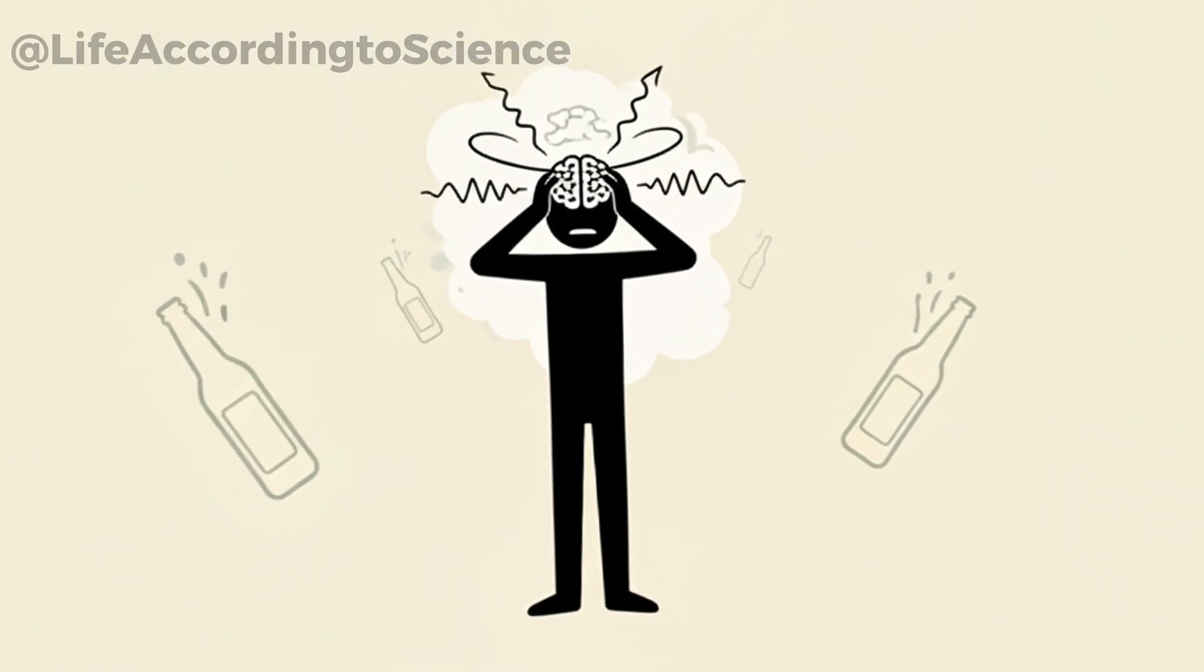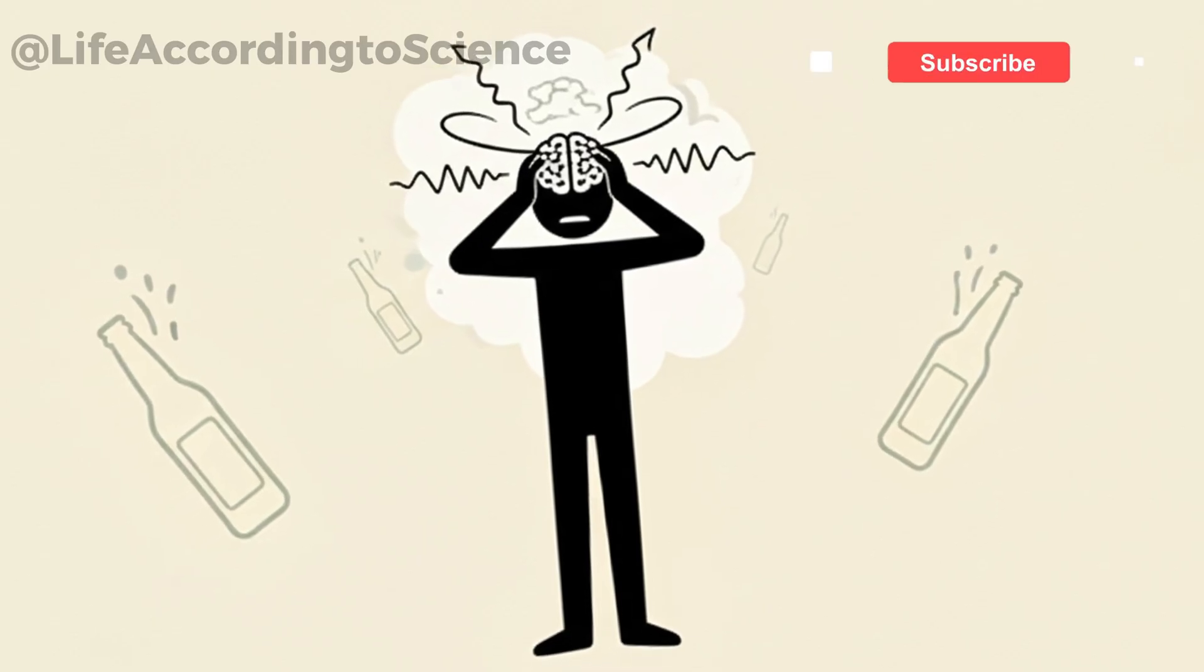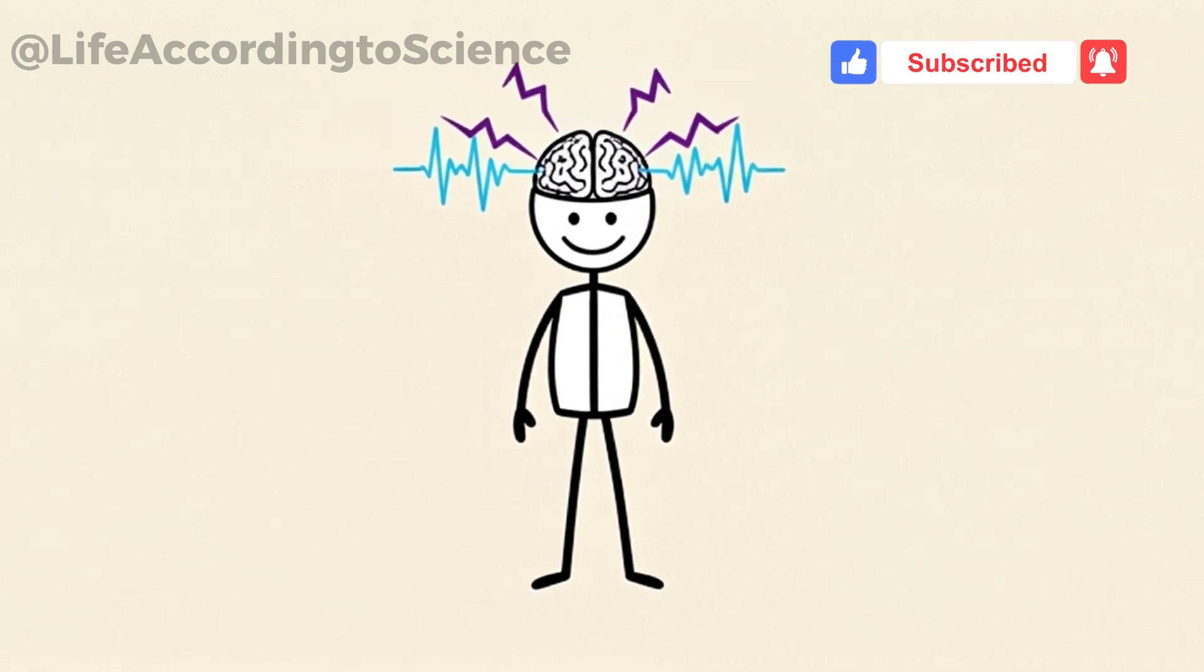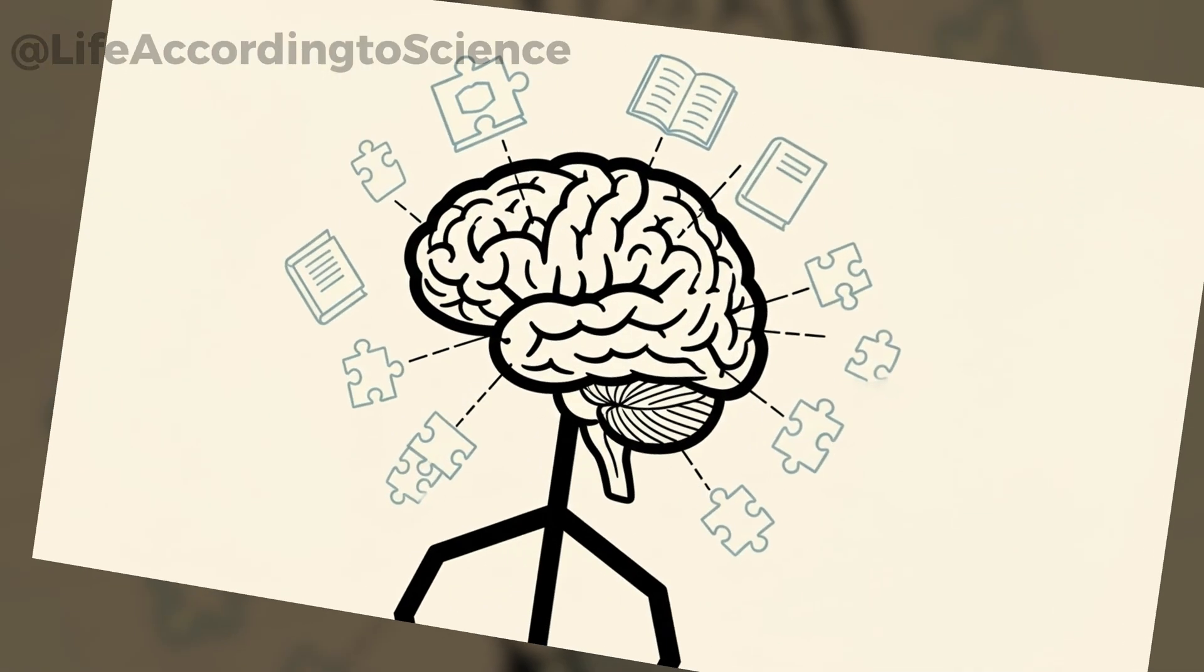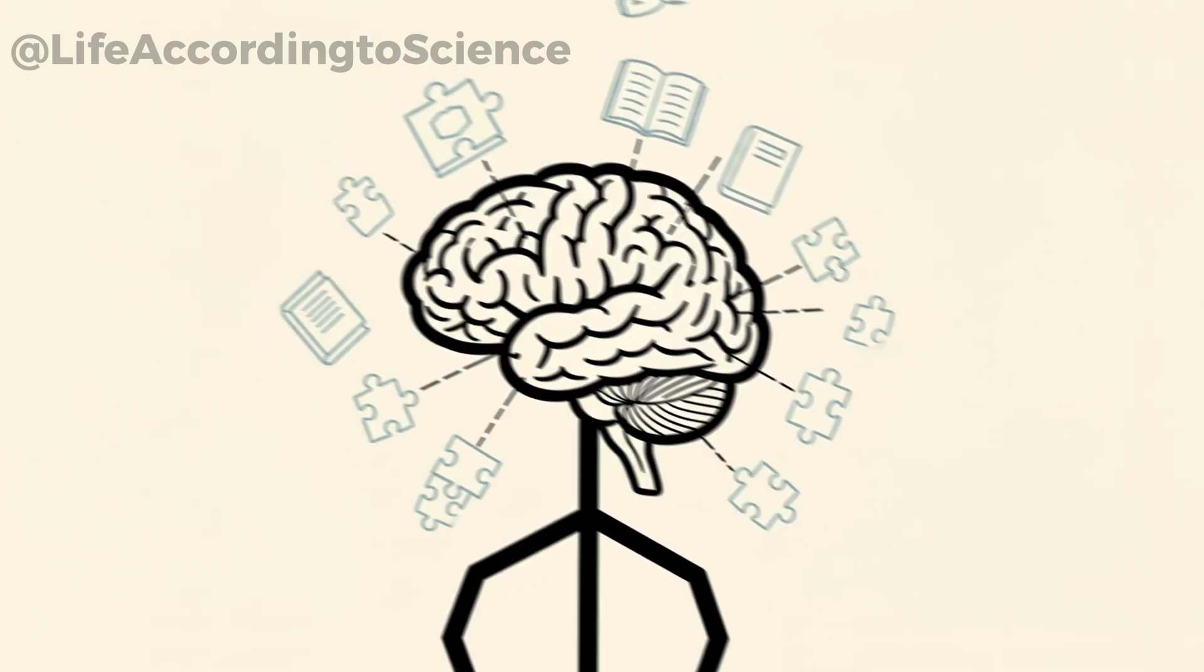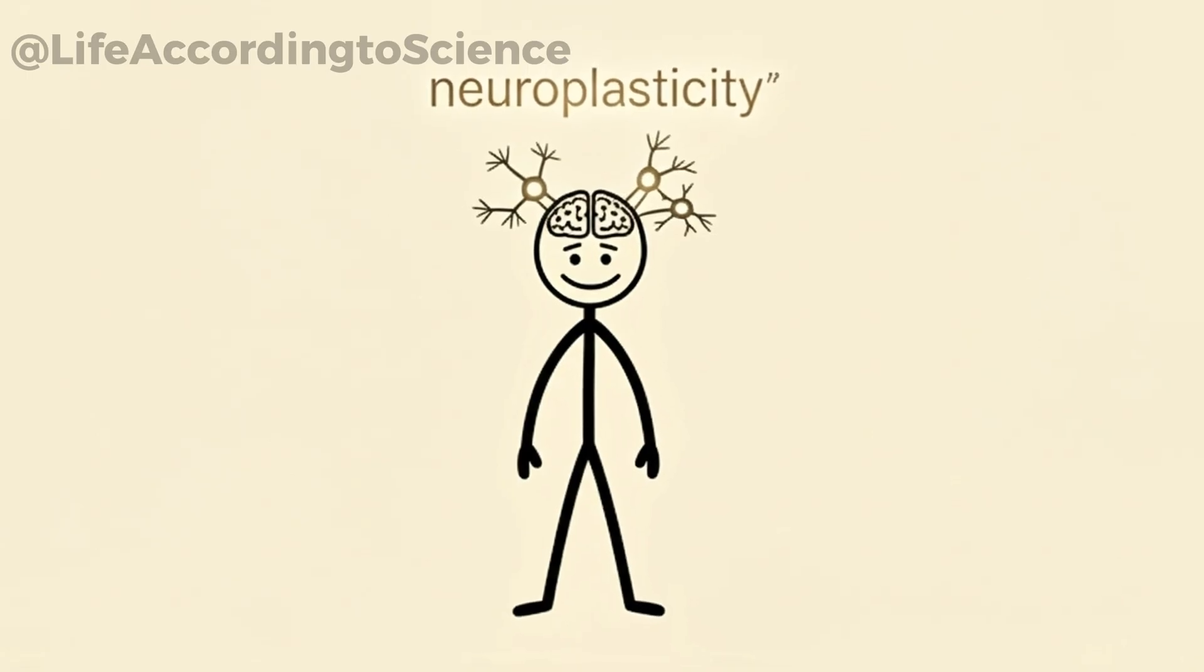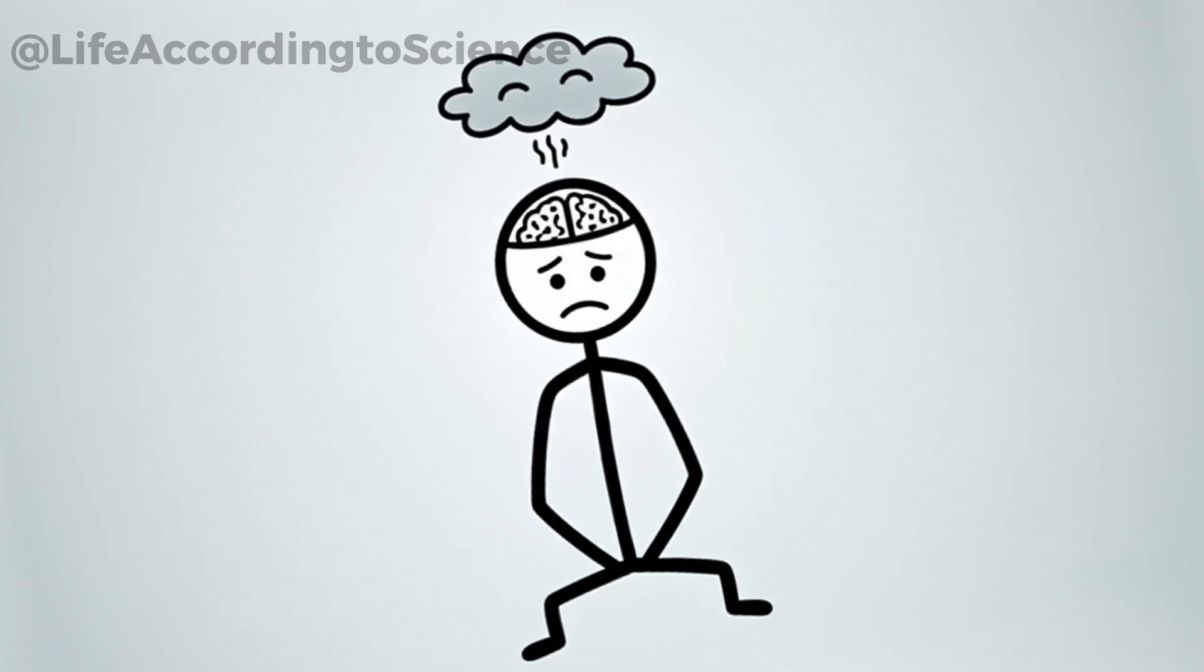Most people think of beer's effect on the brain in terms of hangovers, headaches, dizziness, and brain fog the morning after. But daily drinking creates much deeper changes. Alcohol interferes with neurotransmitters like glutamate and GABA, altering how neurons communicate. This disruption impacts memory formation and learning capacity. Studies show that even moderate daily drinking reduces the brain's ability to form new connections, a process called neuroplasticity. Over time, this dulls cognitive sharpness.